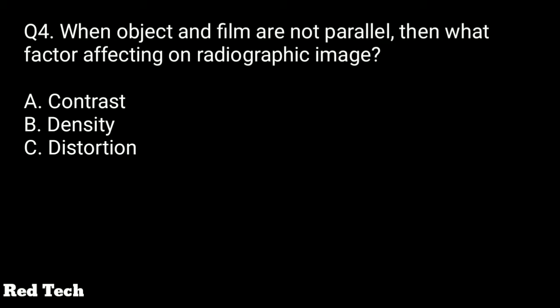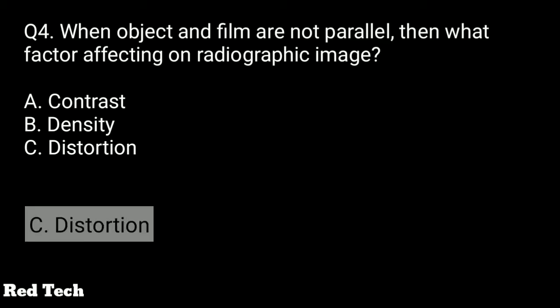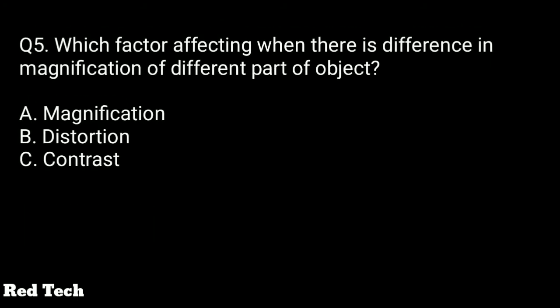Question number four: when the object and film are not parallel, what factor affects the radiographic image? The options are contrast, density, or distortion. The right answer is distortion.